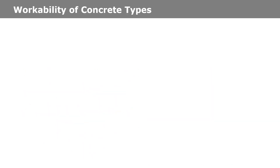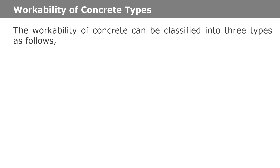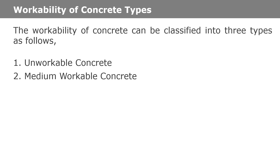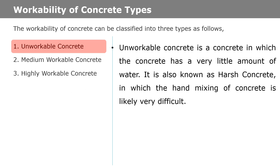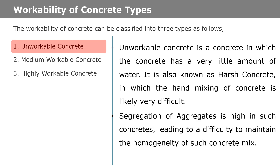The workability of concrete can be classified into three types: Unworkable Concrete, Medium Workable Concrete, and Highly Workable Concrete. Unworkable concrete is concrete that has a very little amount of water. It is also known as harsh concrete, in which hand mixing is very difficult. Segregation of aggregates is high in such concretes, leading to difficulty maintaining the homogeneity of the concrete mix.